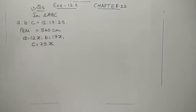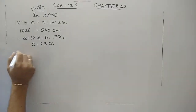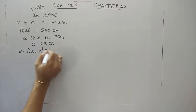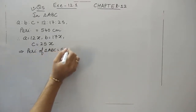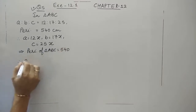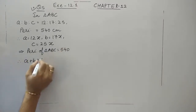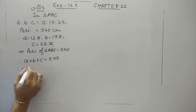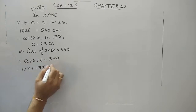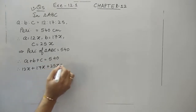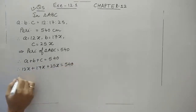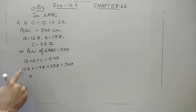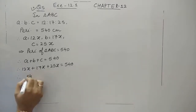The perimeter of triangle ABC is given as 540. The perimeter is the sum of all sides: 12x plus 17x plus 25x equals 540. Adding these gives 54x equals 540, so the value of x is 10.